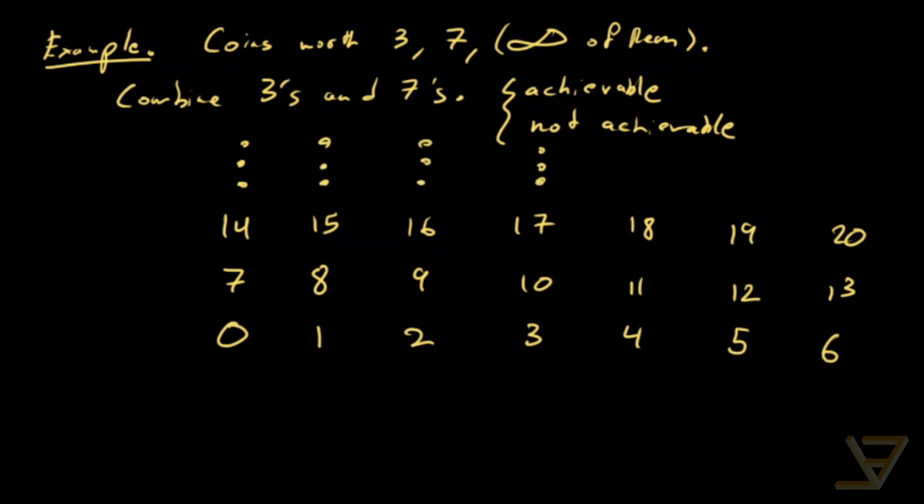So we just keep writing rows of the integers with seven columns. We can do this with three columns as well by the way, it's just a nicer example as you'll see with seven columns. So first of all, 3k such that k is an integer, positive, well not negative integer, are achievable.